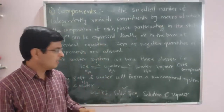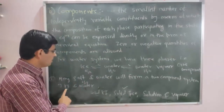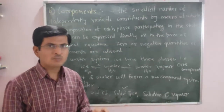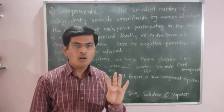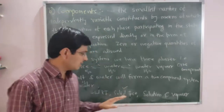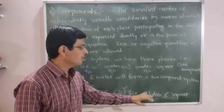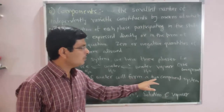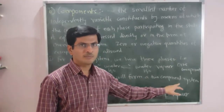By considering KCl and water, we can explain the composition of all four phases involved in the equilibrium. Therefore, this is an example of a two-component system.